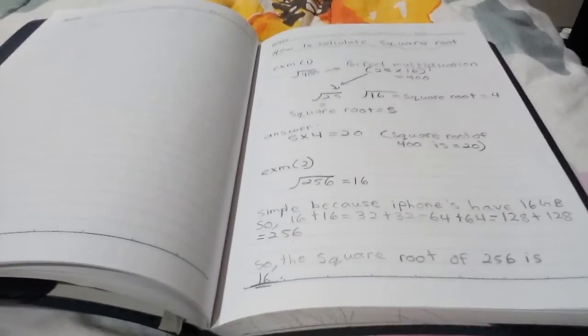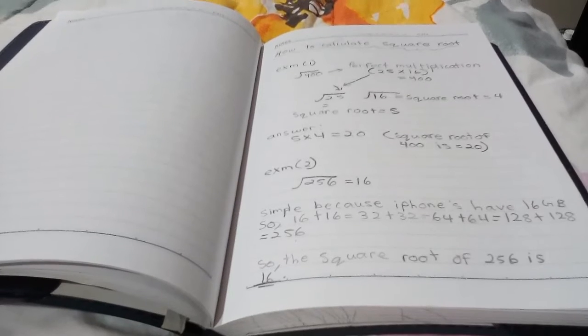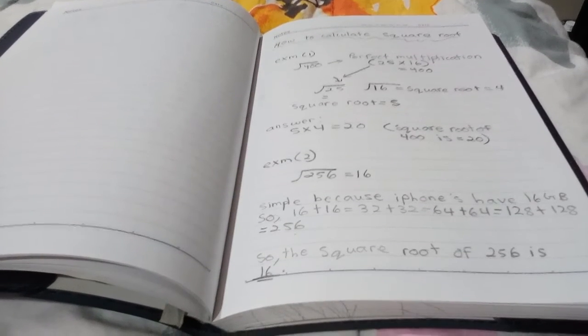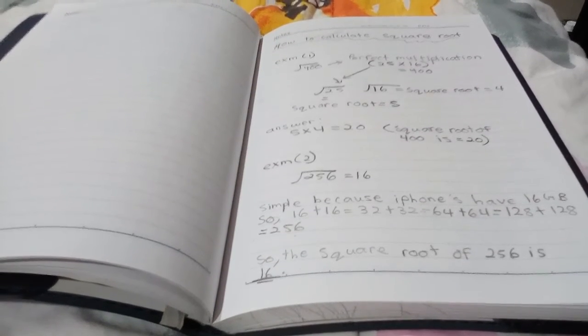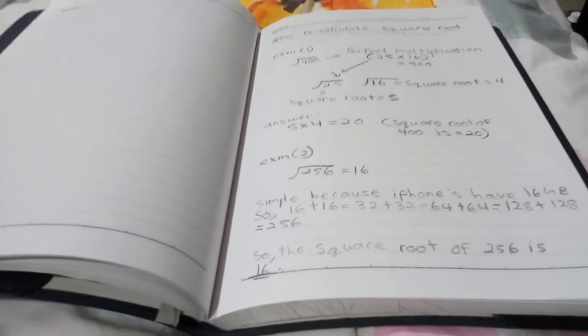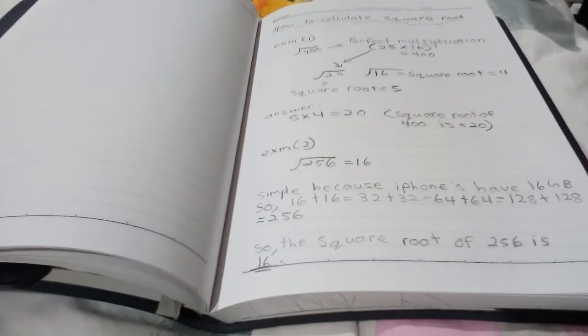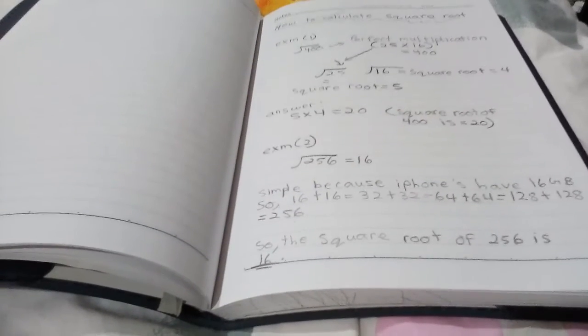First of all we're going to go with the examples. Example one is the square root of 400. So how to calculate the square root of 400. I've made my own simple methods to do it. The first method is the square root of 400.